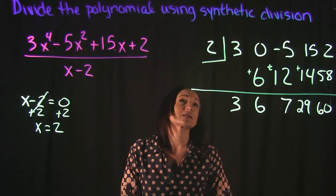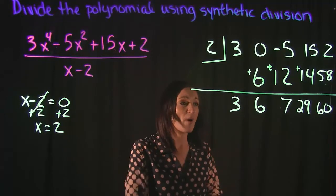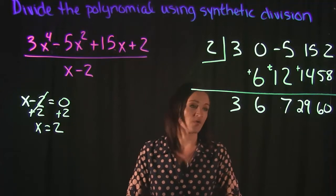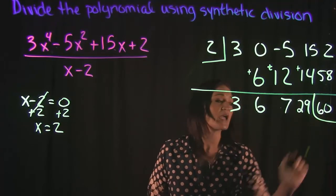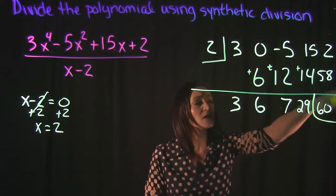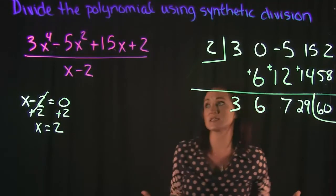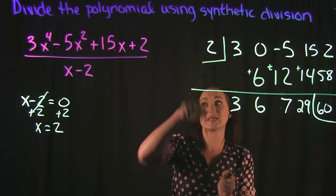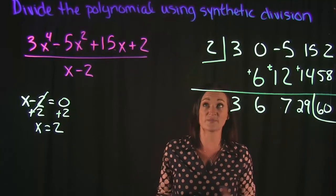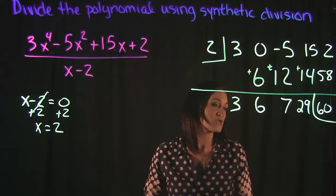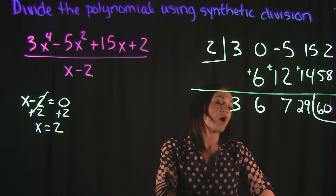Now that we're done with our synthetic division, we need to write our polynomial that's remaining here that we got for our answer. Keep in mind that this 60 over here is going to be our remainder. So we didn't get a 0, so that means that 2 is not a zero of this polynomial function, but that's okay.